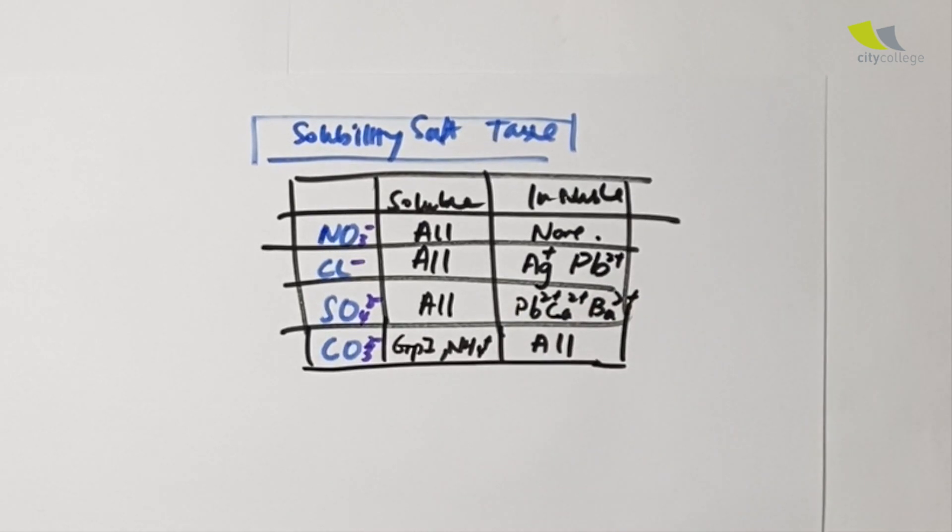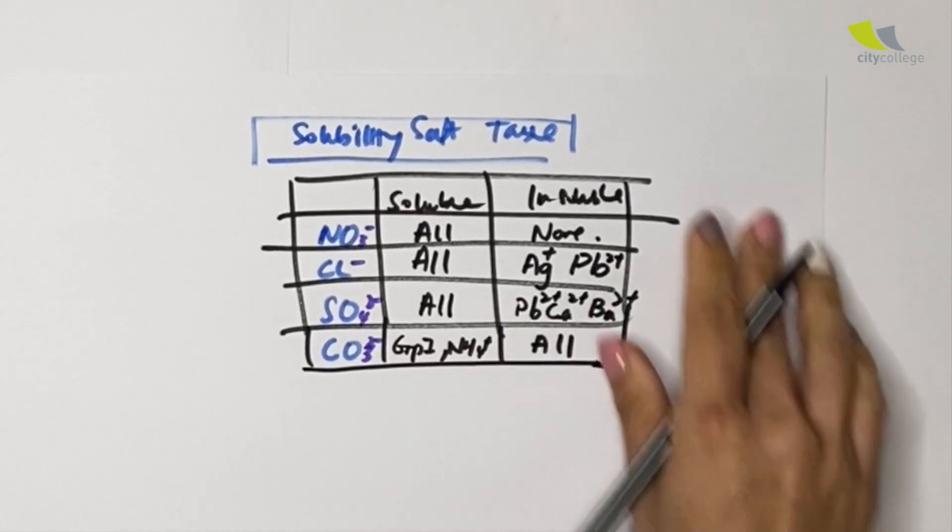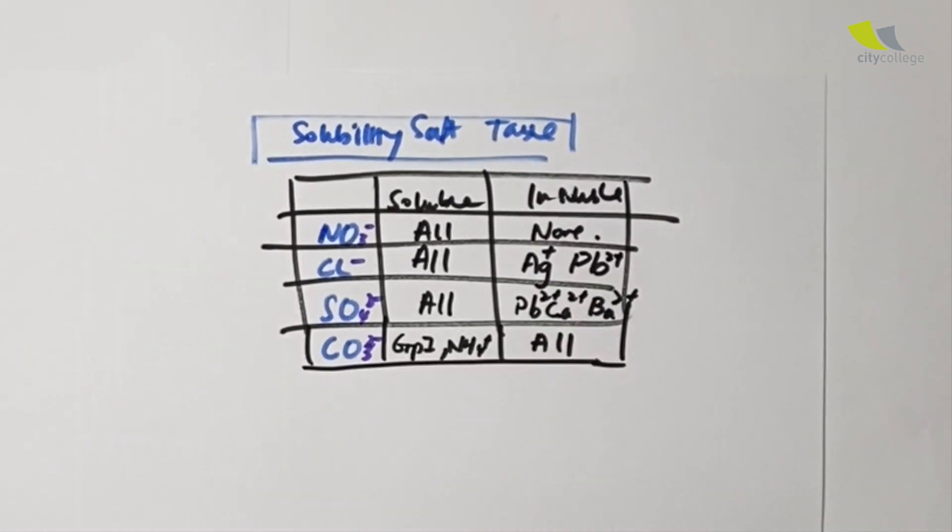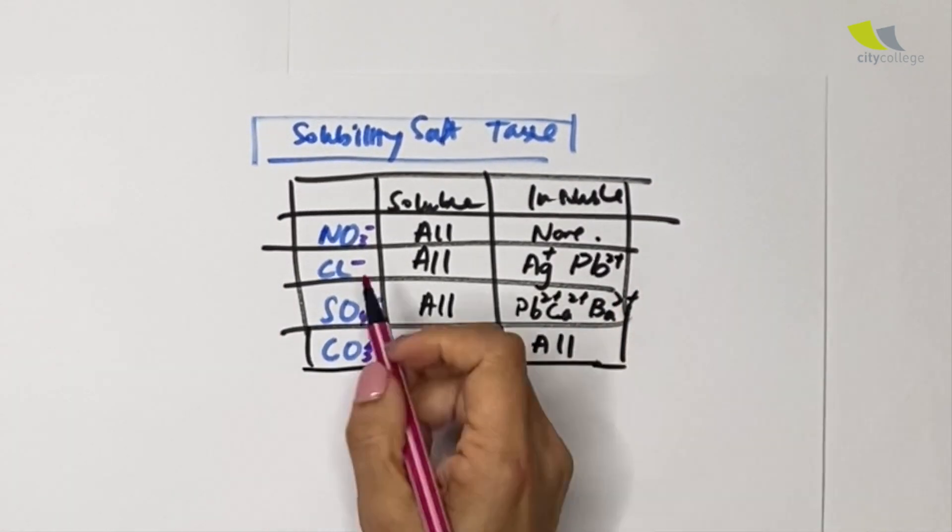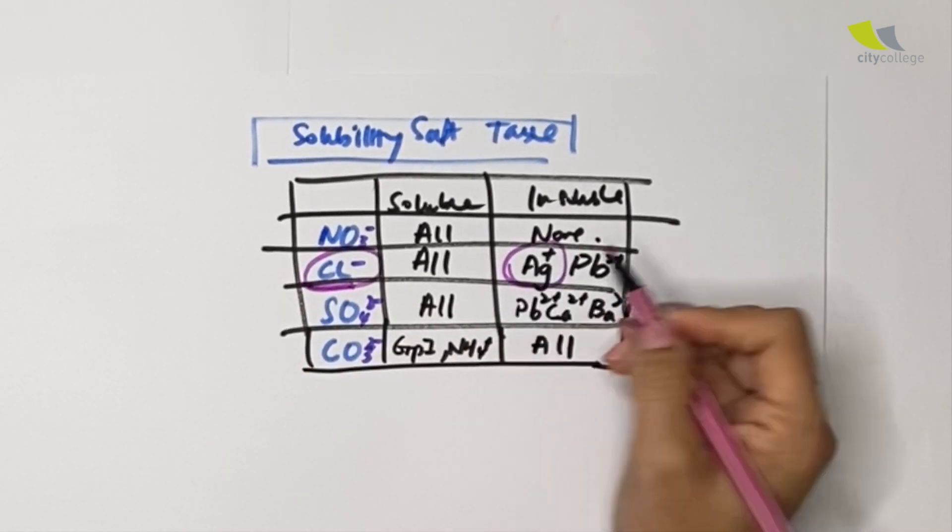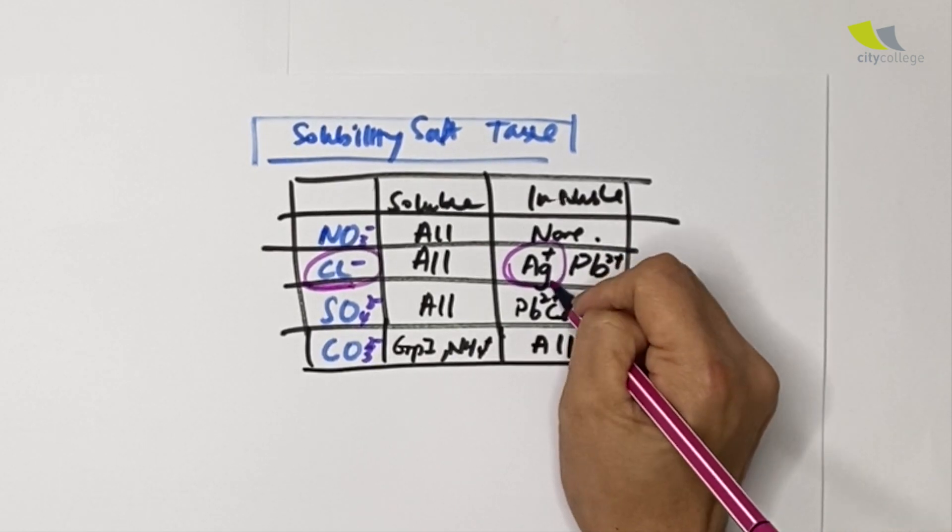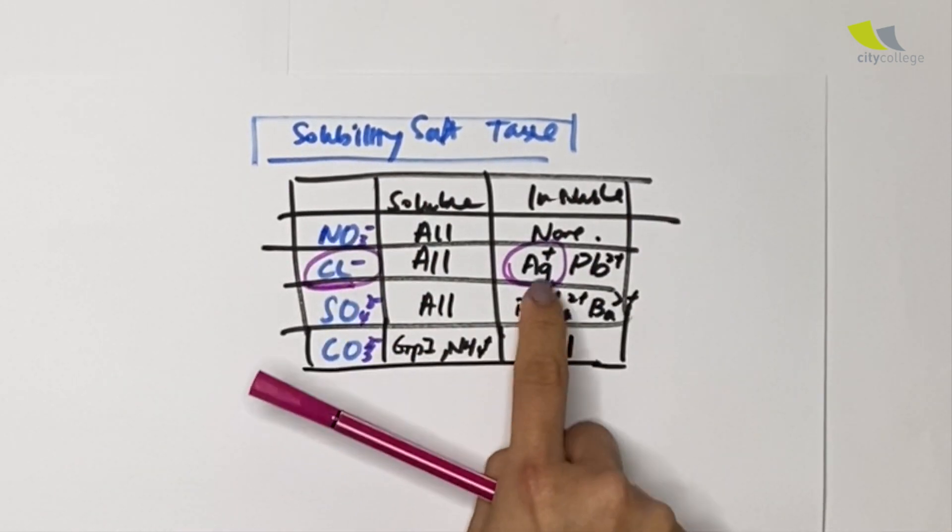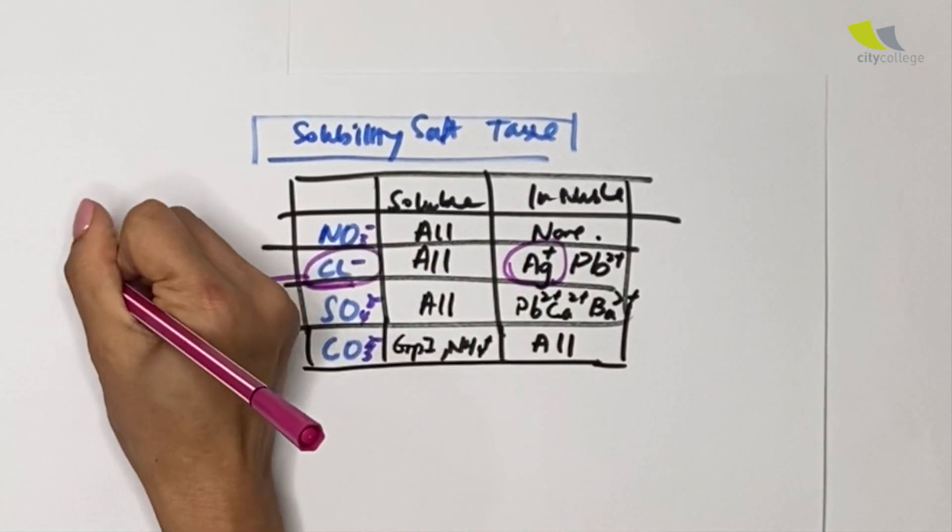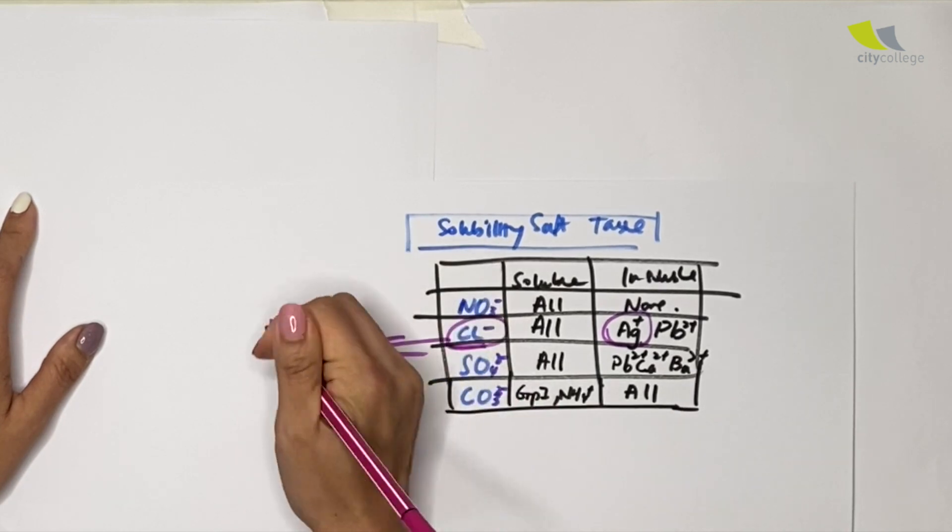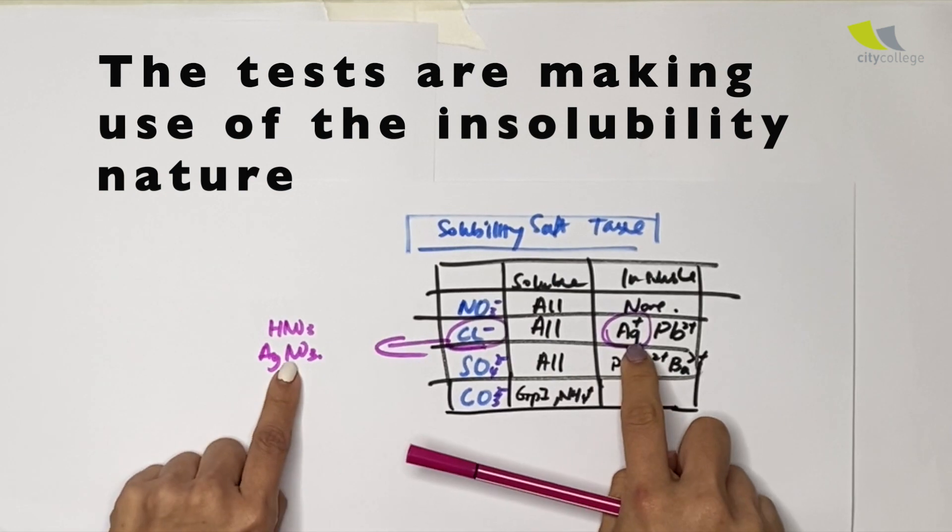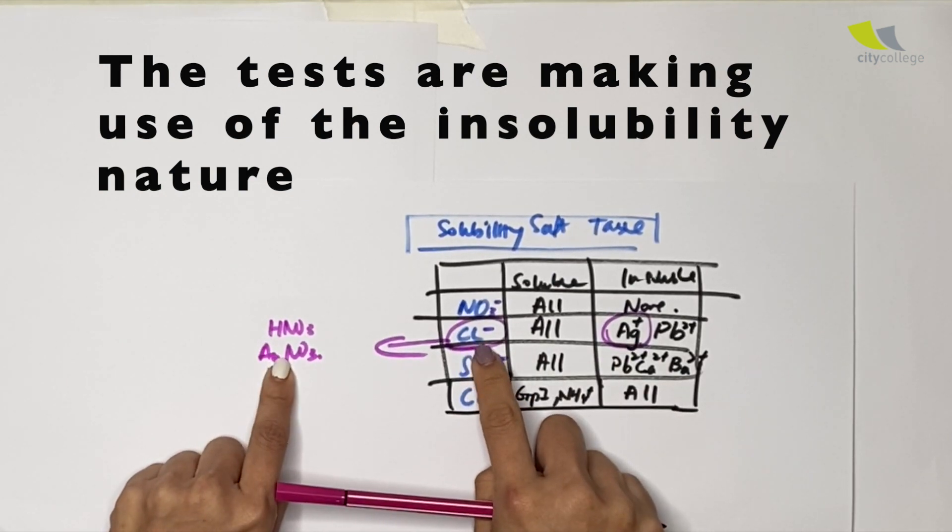Some of you will be thinking, Miss Selena, how will this table help us in the qualitative analysis? I'm glad you asked. Well, very simple. When I look at chloride over here, I saw silver. So whenever you see silver, you will look at this table and you know silver chloride. So actually to test for chloride, you add nitric acid followed by silver nitrate.